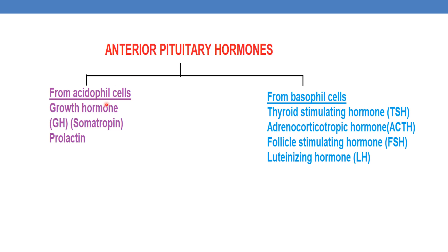From acidophil cells, growth hormone — also called somatotrophin — and prolactin are released. From basophil cells, thyroid stimulating hormone (TSH), adrenocorticotrophic hormone (ACTH), follicle stimulating hormone (FSH), and luteinizing hormone (LH) are released. So four hormones are released from basophil cells.